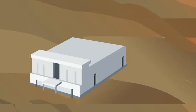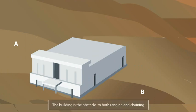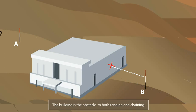Let's say you have to find the distance between two points A and B with a building between those points. The building is the obstacle to both ranging and chaining. Note that the building is an upright structure, so it is impossible to set intermediate survey stations or run a chain along its surface.